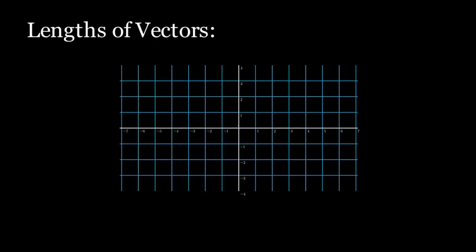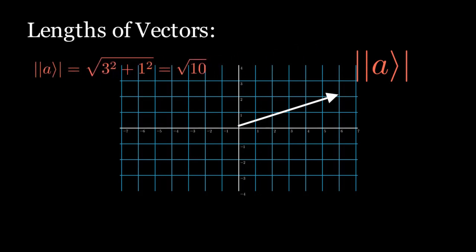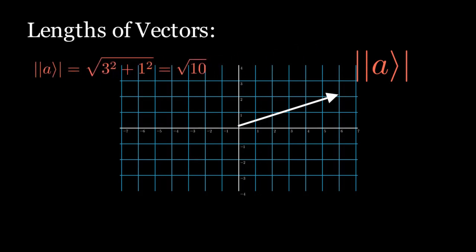Now let's look at the lengths of vectors. The length of a vector is the distance from its initial point to its terminal point — the square root of the sum of squares of the entries, which comes from the Pythagorean theorem. We denote the length of ket a with two bars. For ket a with entries 3 and 1, the length equals the square root of 3² + 1², which equals the square root of 10.